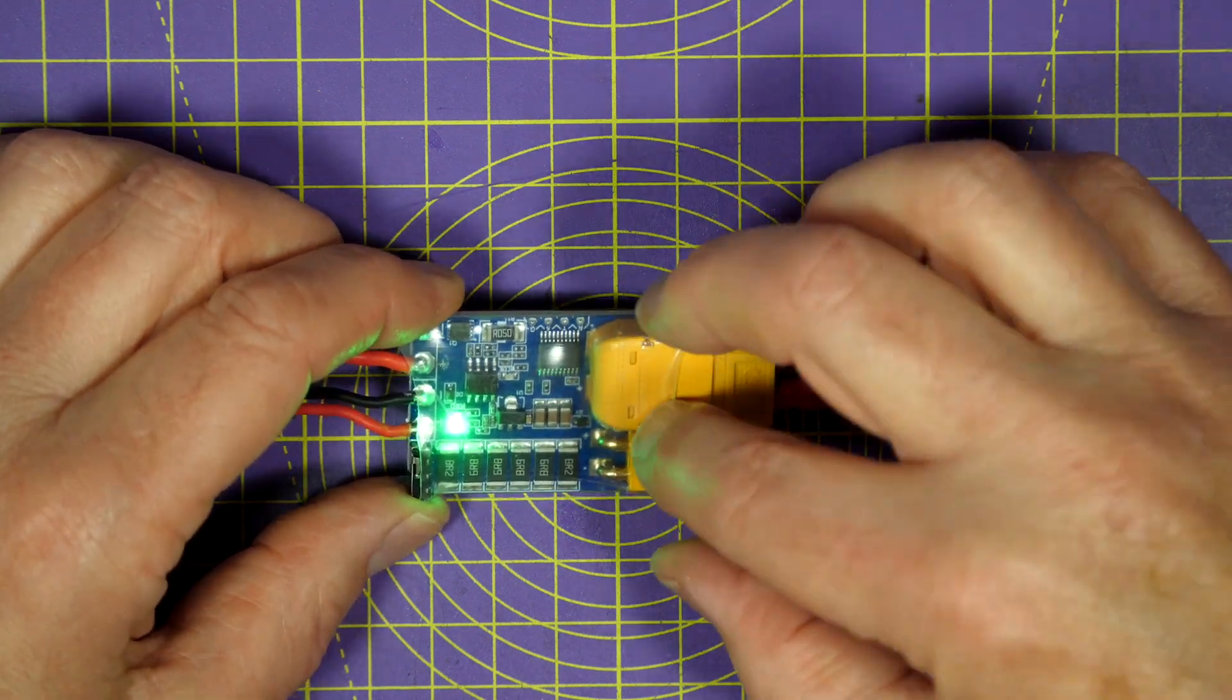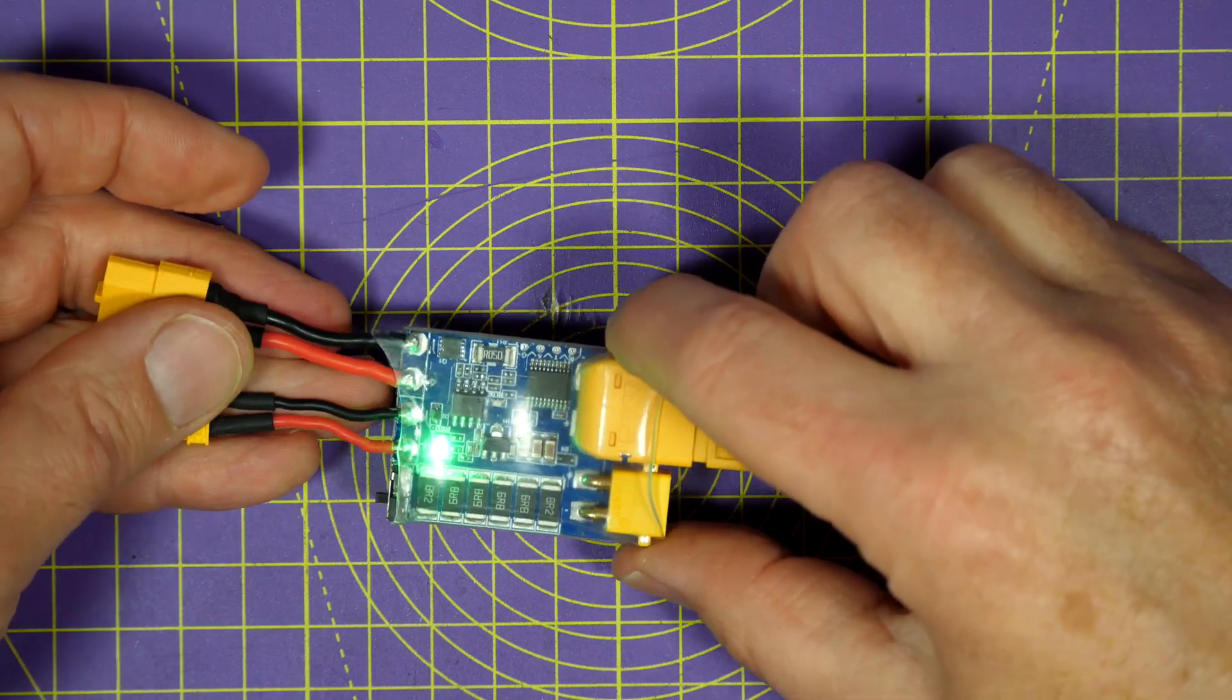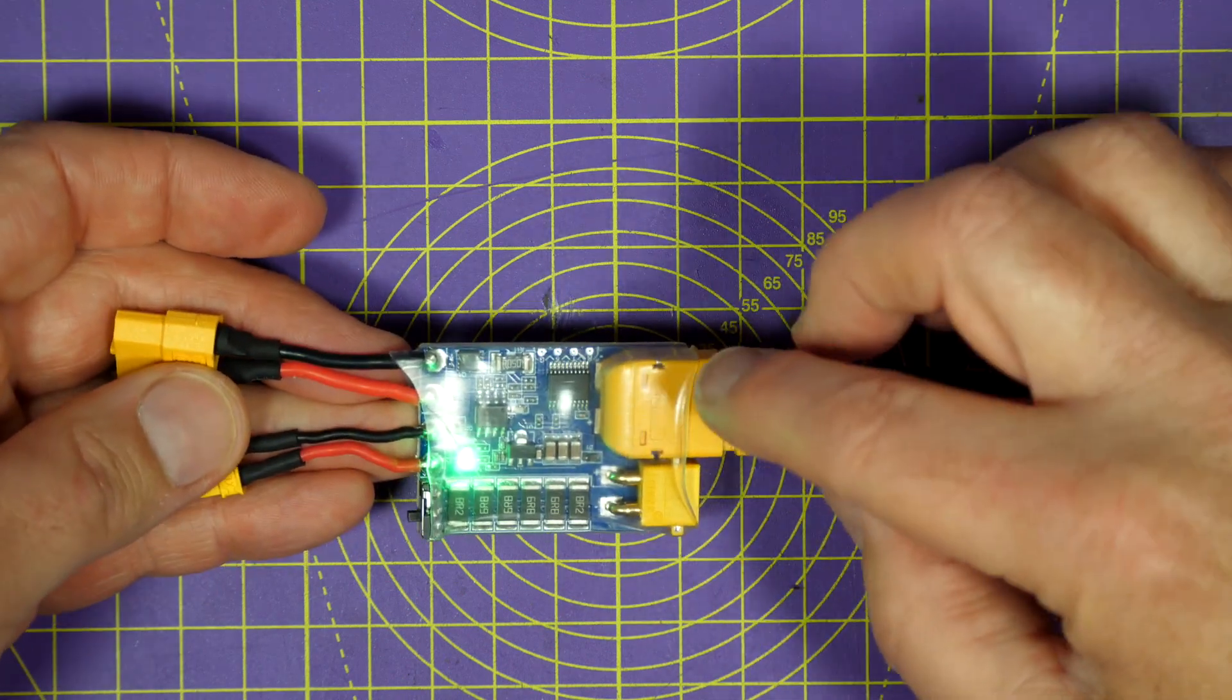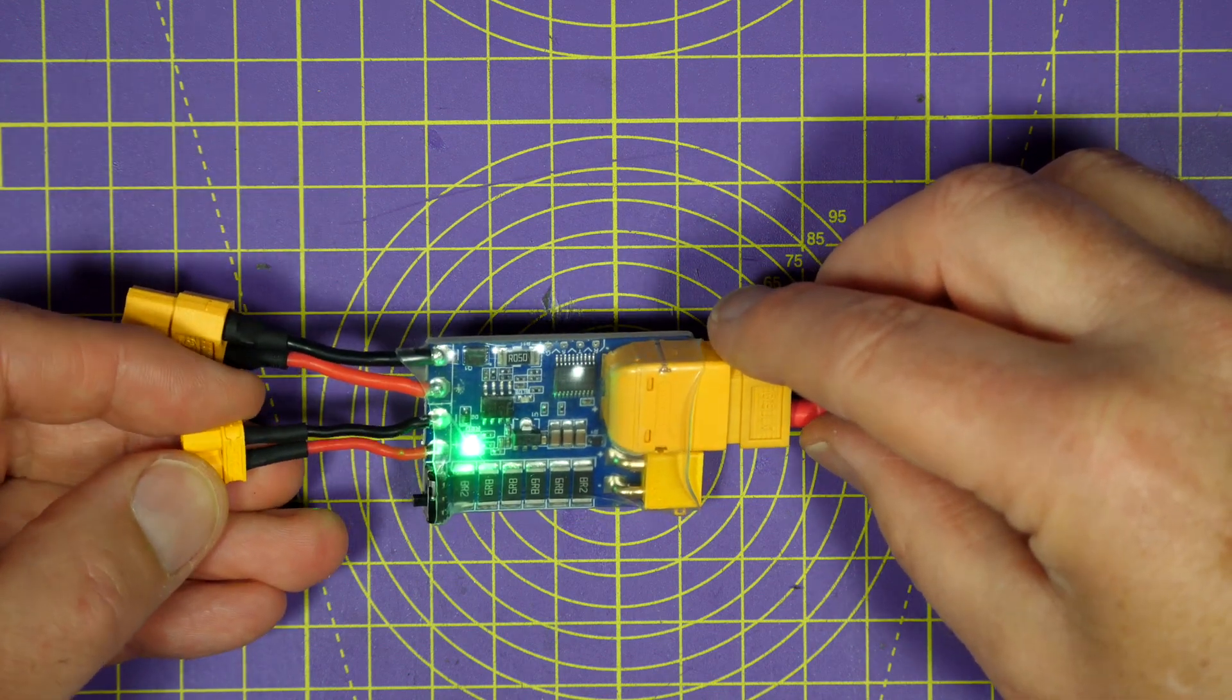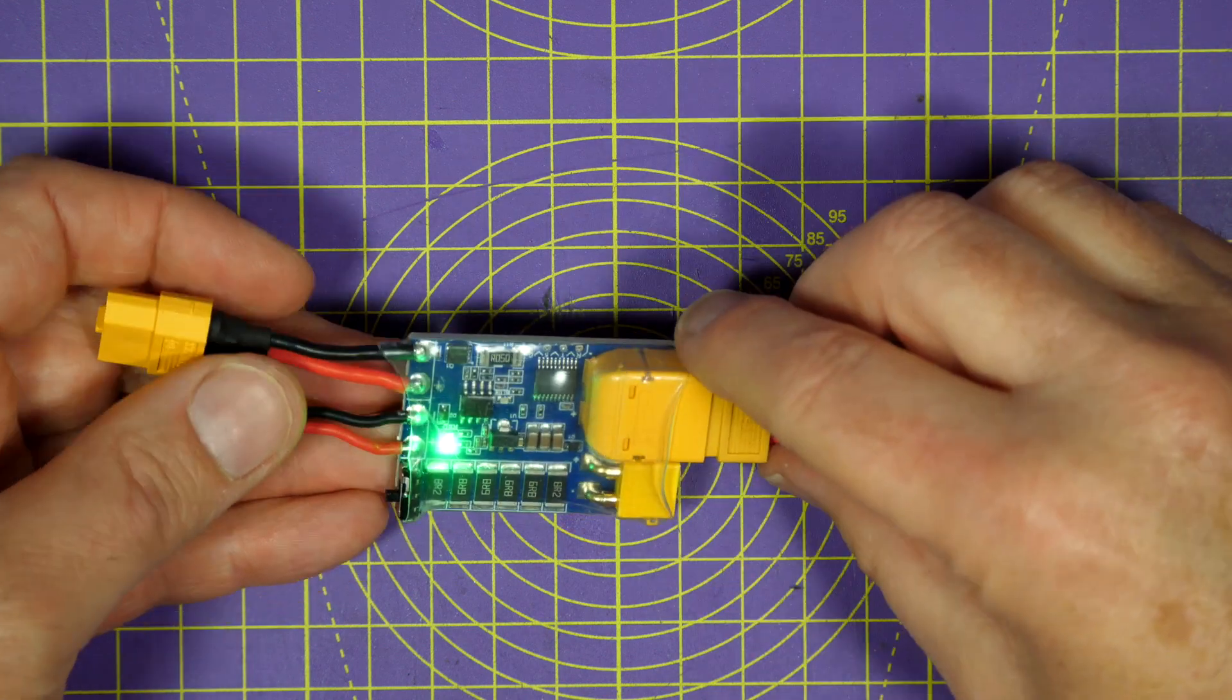Now these input and output connectors are interconnected, so you can happily use the XT60 for the battery and the XT30 to power a whoop for example, and vice versa.